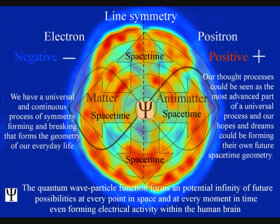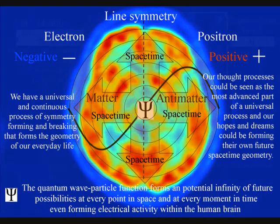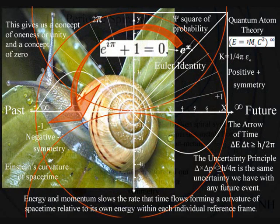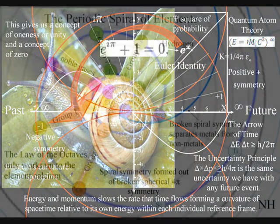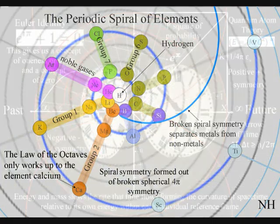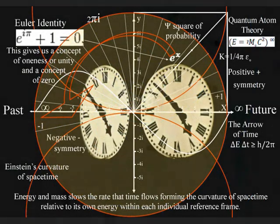This process is totally universal and interactive. From the largest object to the smallest creature, right down to the smallest element of the periodic table, will slow the rate that time flows, forming a curvature of space-time relative to its own energy or mass.